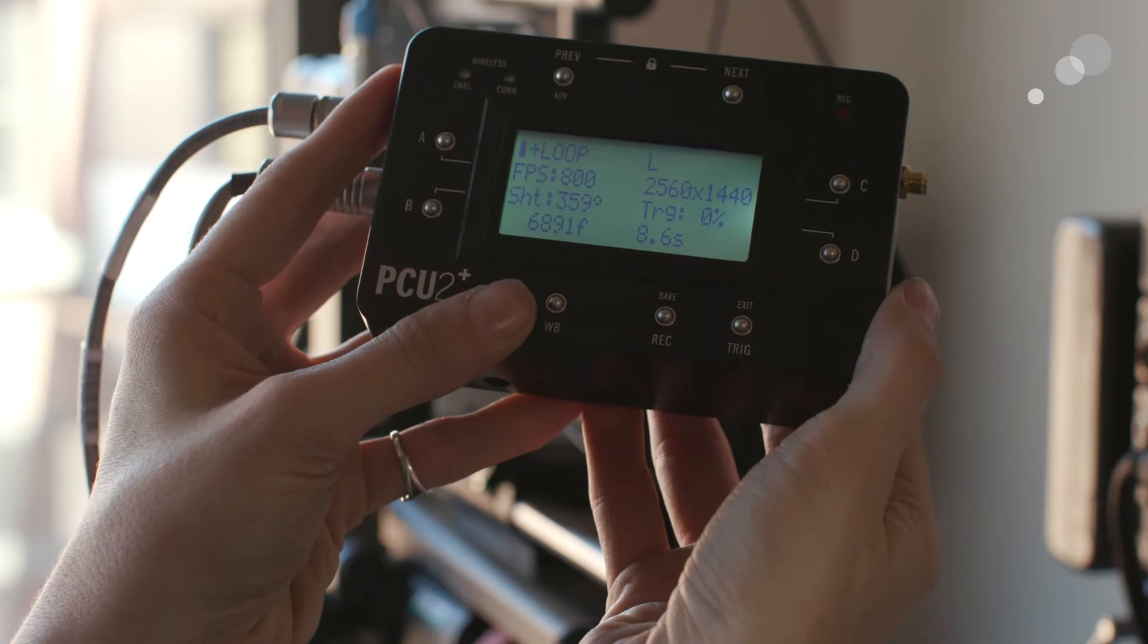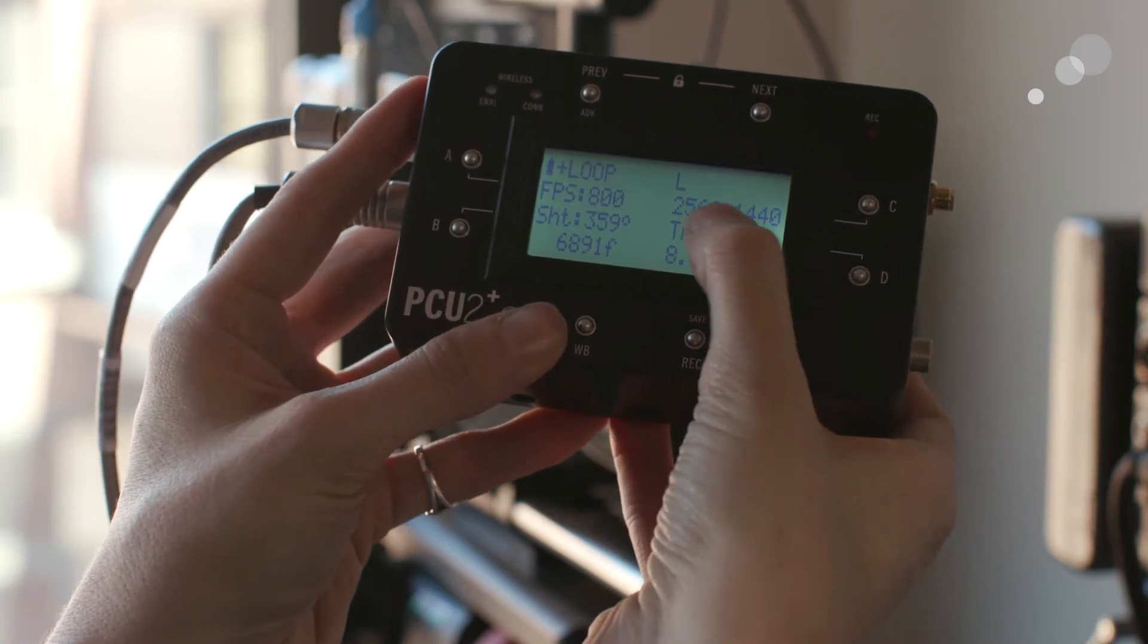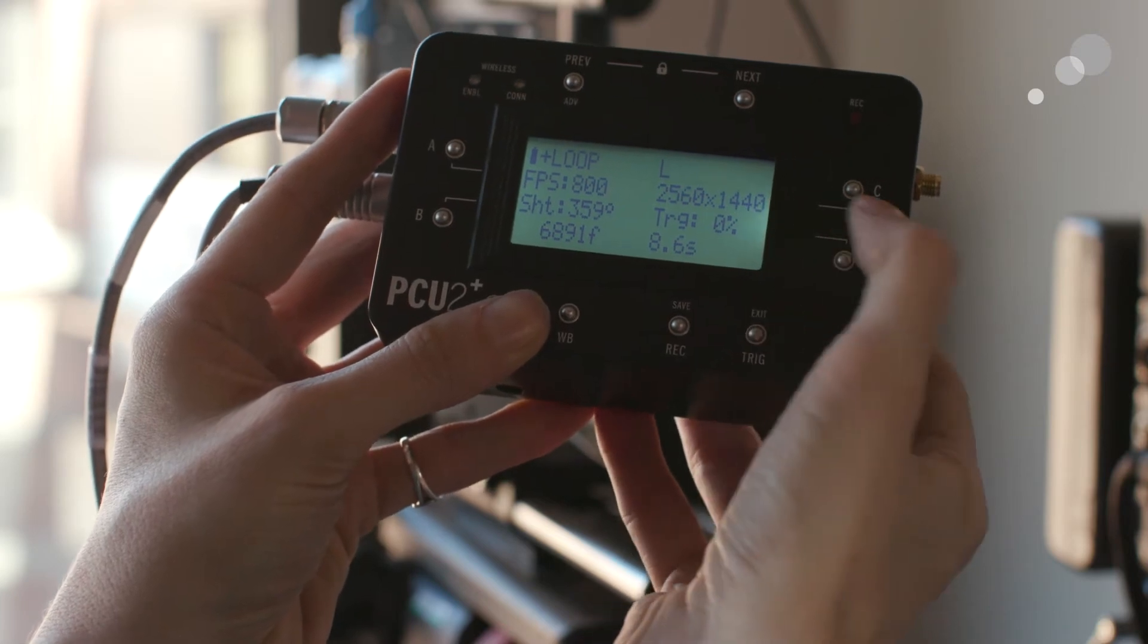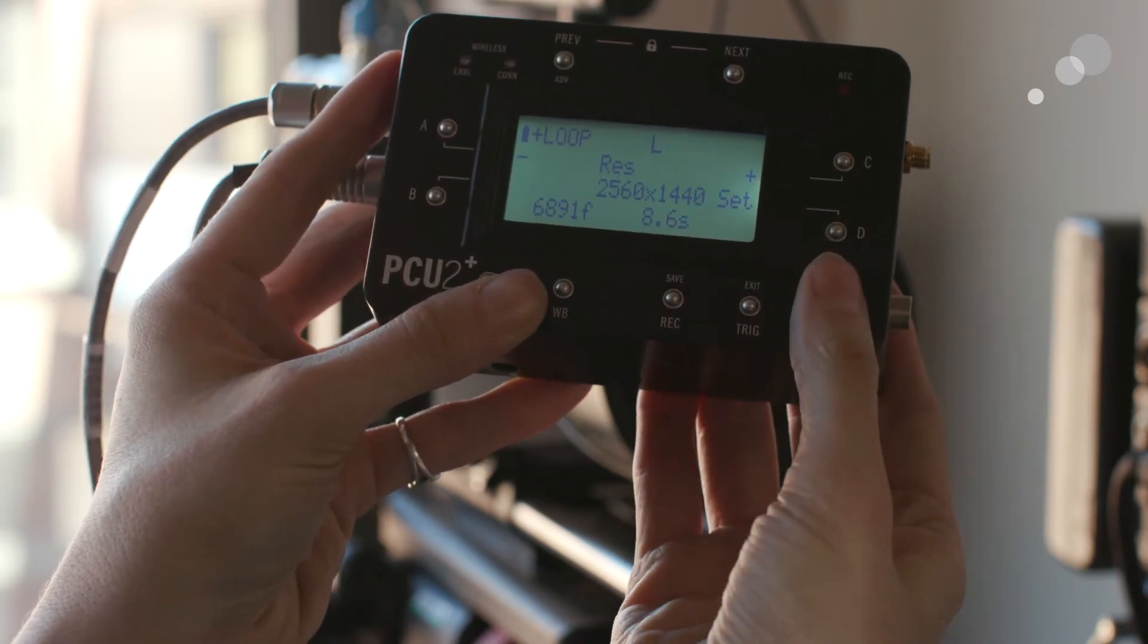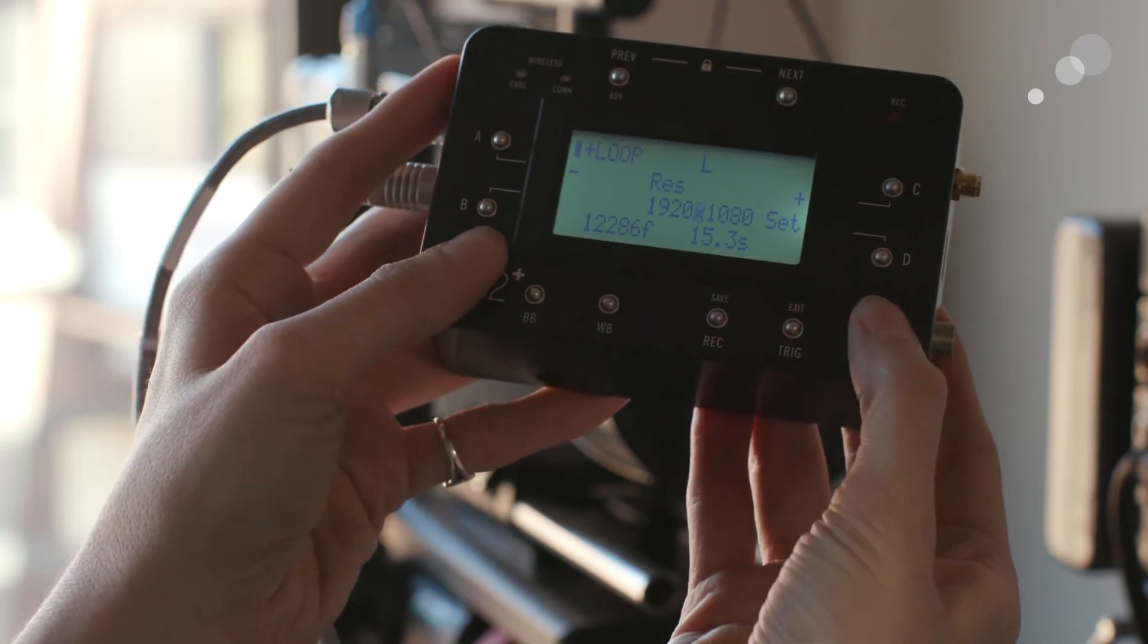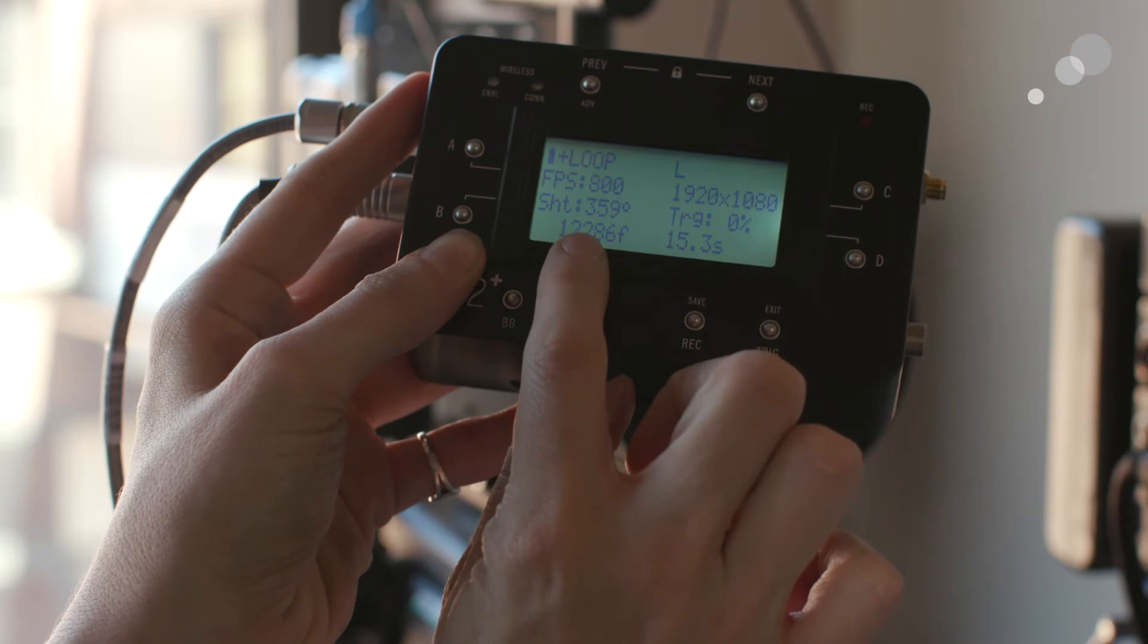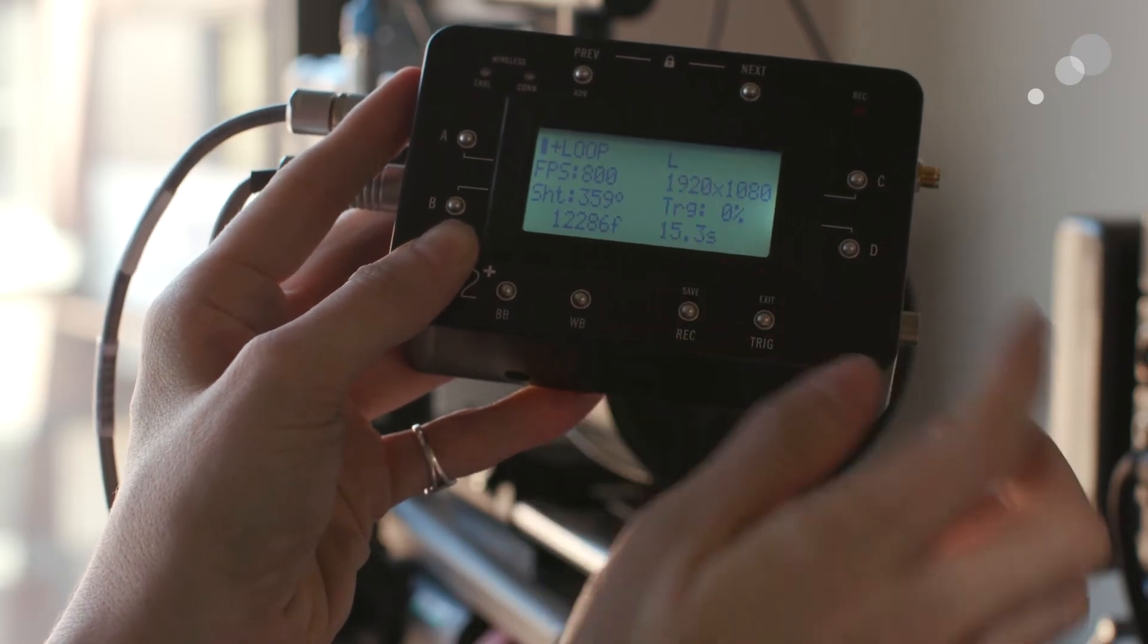so I know if this is going to work for my action. Once I hit set, both bodies have updated. Also important setting here, my resolution. Right now I'm at the 2.5K resolution. Let's say I only need 1080 for this shot. I can go to 1920x1080 and hit set. If you notice, I gained more frames and more time because I lowered my resolution.